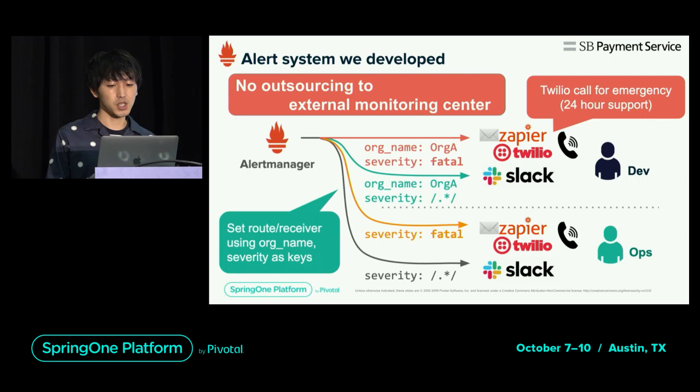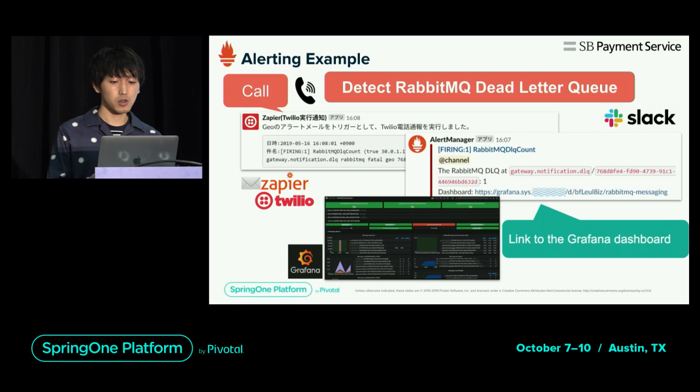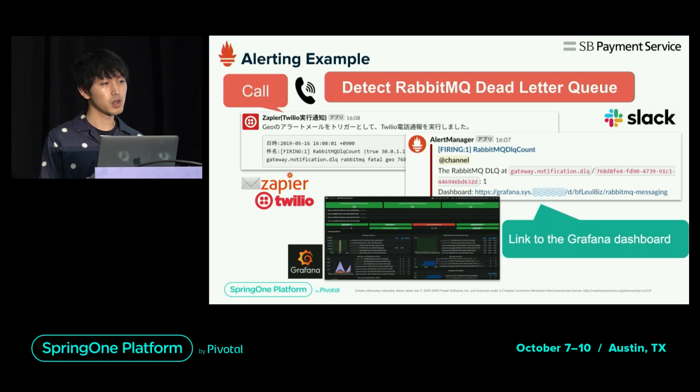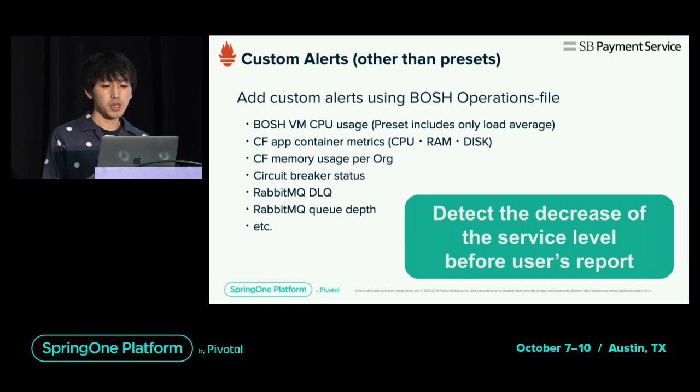This is an example of an alert response. For example, if RabbitMQ's Dead Letter Queue that requires immediate action is detected, Trilio will call me. The alert is also sent to Slack. We can check the status in Grafana from the link written in the notification. In addition, by adding add-on community predefined presets, we are trying to detect the decrease of service level before the user's report.